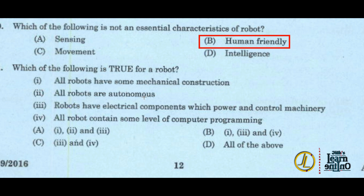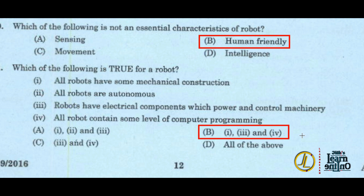The options are: all robots have some mechanical construction; all robots are autonomous; robots have electrical components which power and control machinery; all robots contain some level of computer programming. The second statement is false — all the other options B, 1, 3, and 4 are true.